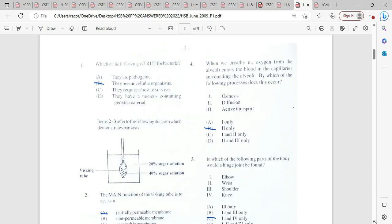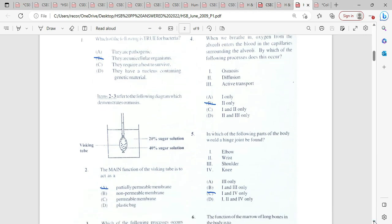Which of the following is true for bacteria? If they are pathogenic, that would have been virus. They require a host, that would have been virus. They have a nucleus containing, that is not true. So our answer here is going to be the remaining option. For the greater part, I'm just going to be looking at the answers. Pause the screen if you need to look at the other options.